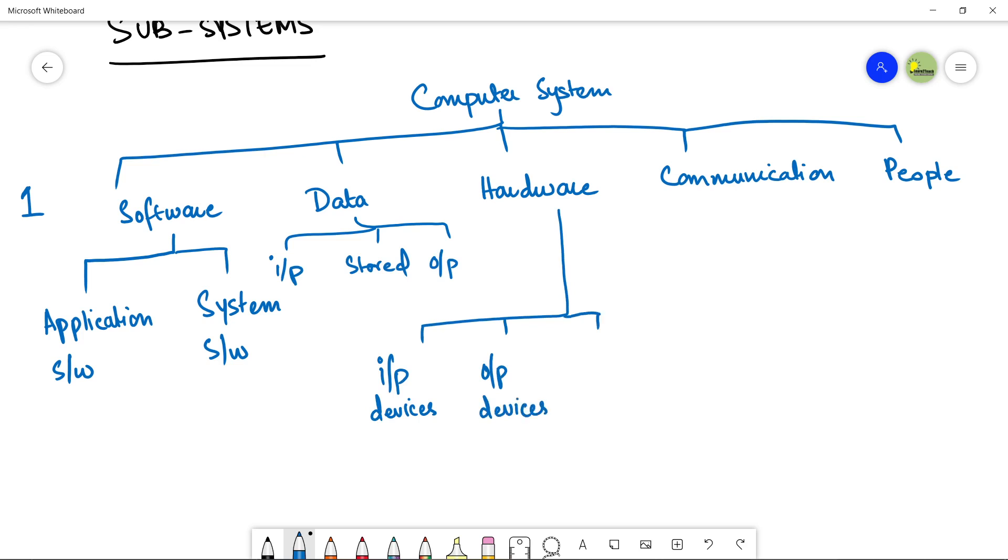Then you can have the storage devices like your hard drive, like USB, and so on. And the fourth thing is your processor, CPU, the central processing unit that helps to process the data. This is how hardware can be further divided into subsystems.